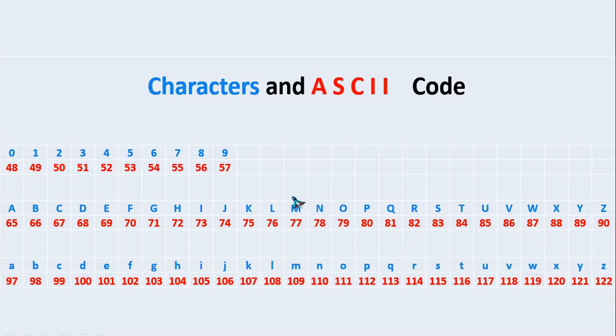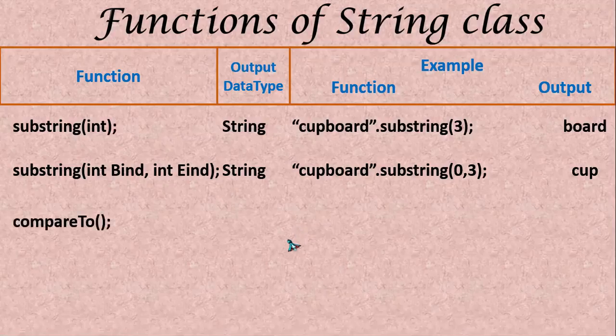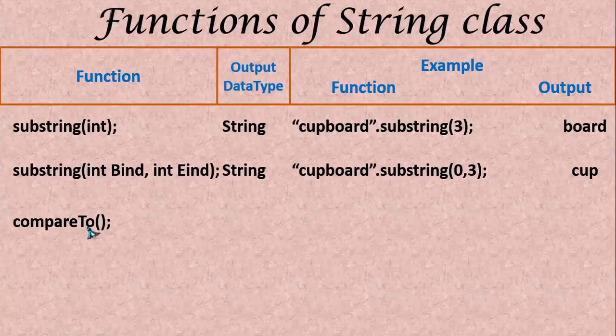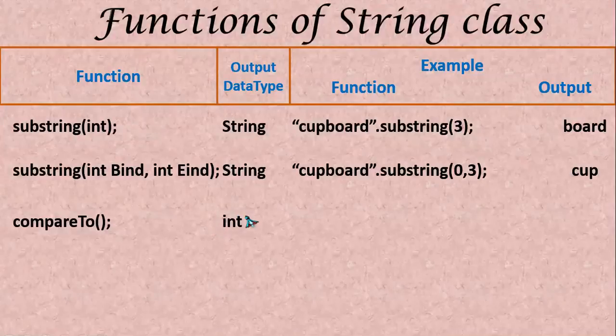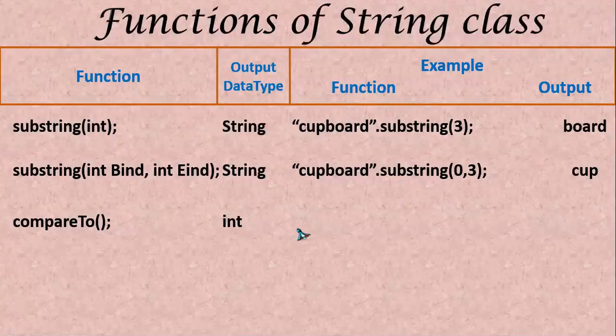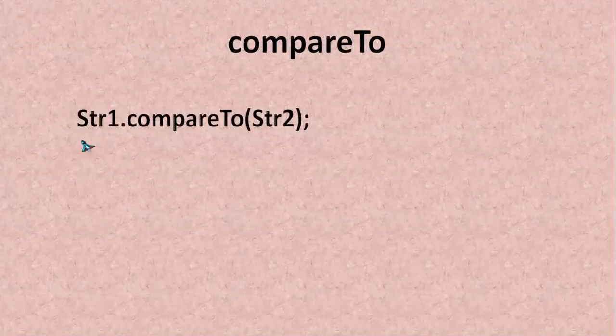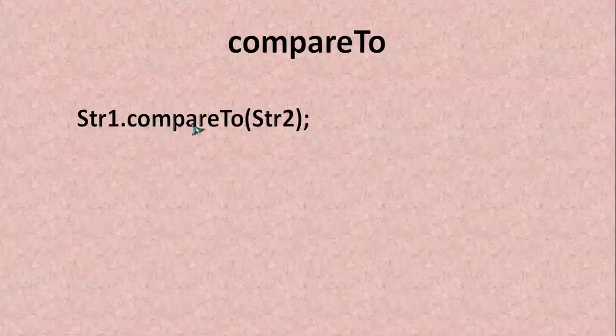Compare to function going to compare two strings lexicographically. That means as in the dictionary it is going to compare. Here we have compareTo T is in capital here. The output is going to be integer type after comparing. This function not only compares lexicographically but also compares the length of the string. I will explain with some examples.